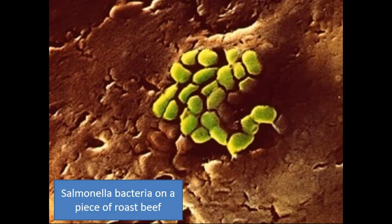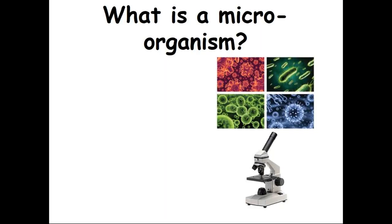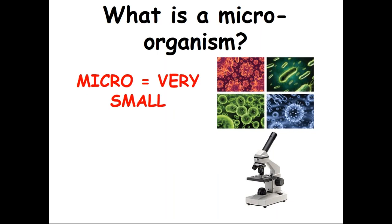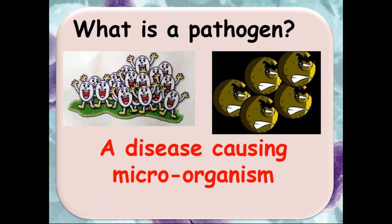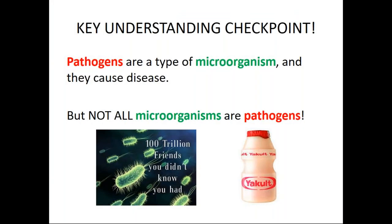In the picture, it shows the salmonella bacteria on a piece of roast beef. What's a microorganism? Micro means very small, and organism means living thing. In the case of a pathogen, it's a disease-causing microorganism. Pathogens are a type of microorganism and they cause disease, but not all microorganisms are pathogens. Some microorganisms are used in industry to make yogurt or bread. Those which cause disease are called infectious diseases.